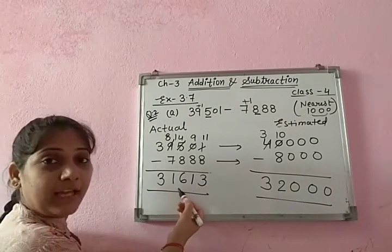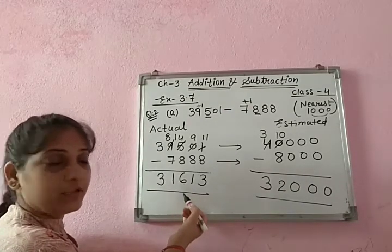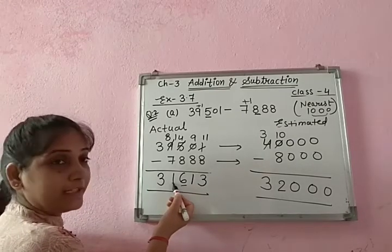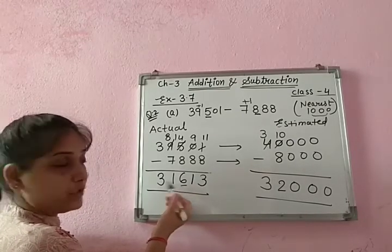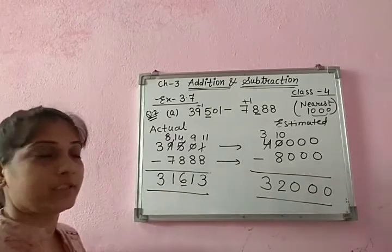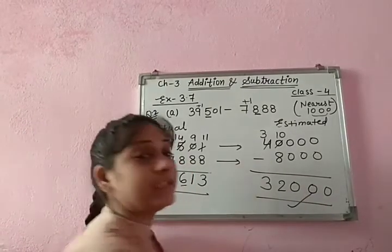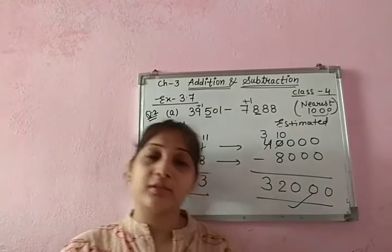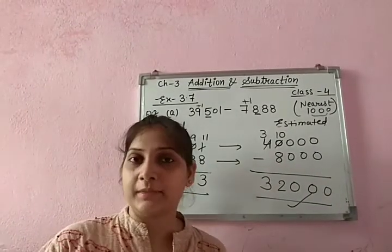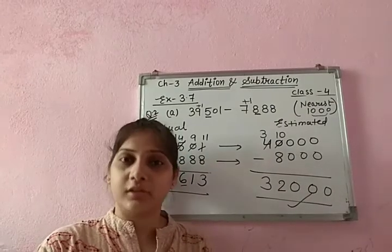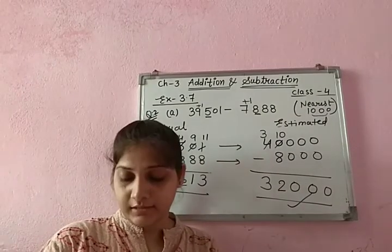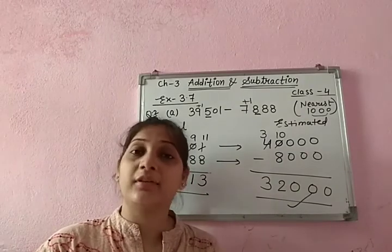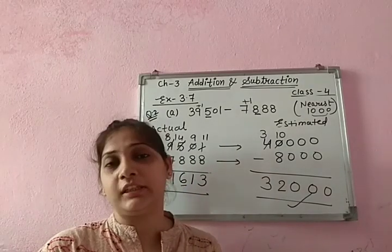If you estimate the actual difference directly: 6 is greater than 5, so add 1 — that also gives 32,000. So 32,000 is the estimated difference of the given numbers. In the same way, you can solve question 2 part B. In your worksheet, solve Exercise 3.6 question 2 all parts, and Exercise 3.7 question 1 and 2.